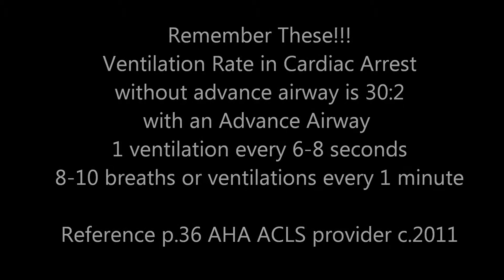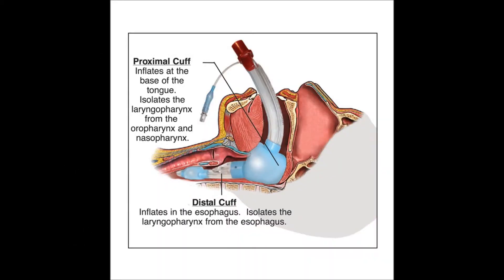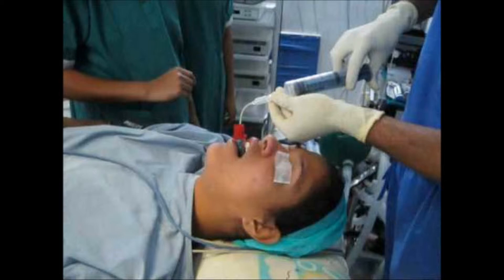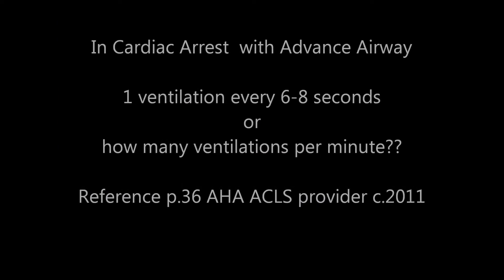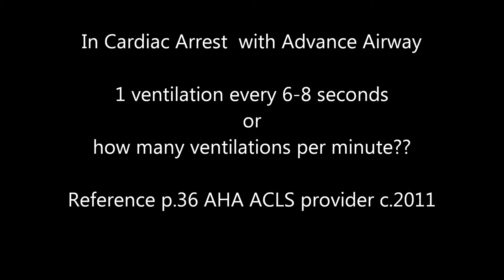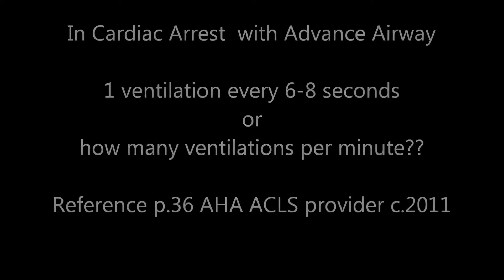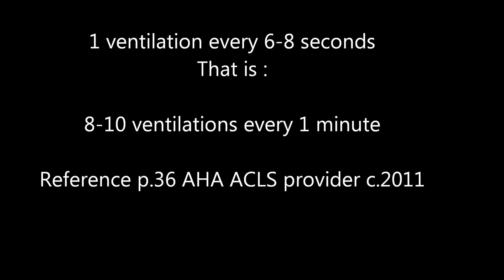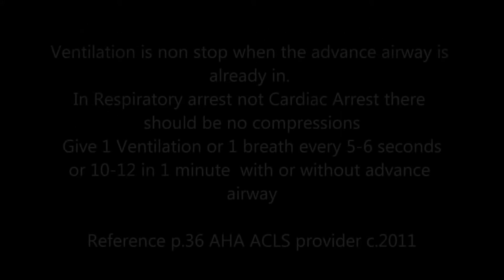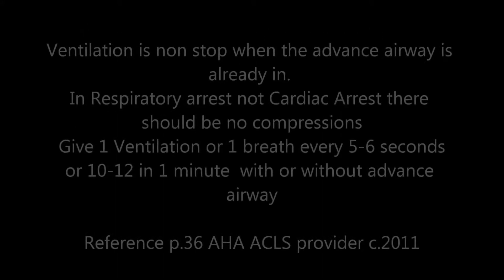If you have an advanced airway — such as a laryngeal mask airway, laryngeal tube, esophageal tracheal tube, or endotracheal tube — during cardiac arrest it should be one ventilation every six to eight seconds. Compressions should be non-stop, and that works out to eight to ten breaths per minute.